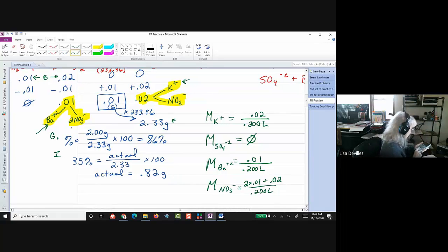Okay. So, if I work that out, 0.02. So, I get 0.01 molarity. 1 divided by 0.02. I get 0.05. And then, 2 times 0.01 plus 0.02.